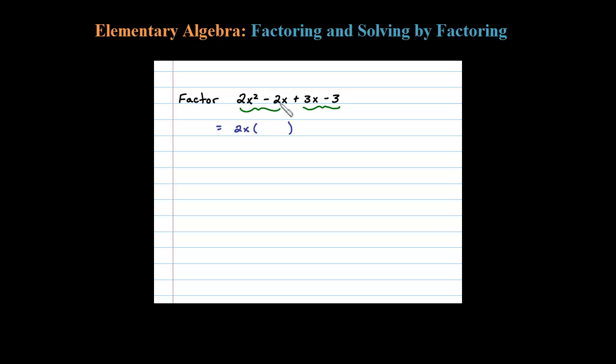If you factor out a 2x out of the first two terms, you'll be left with X minus 1. Now the GCF for the second two terms looks like it's 3.